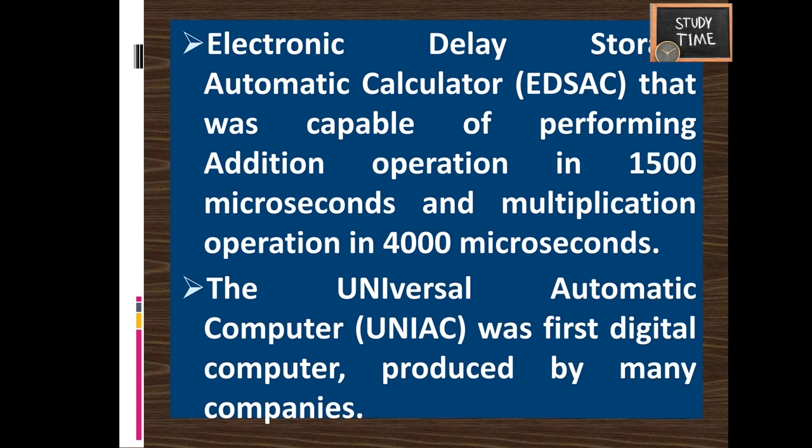UNIVAC — the Universal Automatic Computer — was the first digital computer produced commercially by many companies like IBM, Universal Accounting Company, and General Electronic Corporation. It was the first commercial large-scale digital computer produced in 1951. During the 1940s and early 1950s, many other stored-program computers were developed, including Johnniac and Illiac.